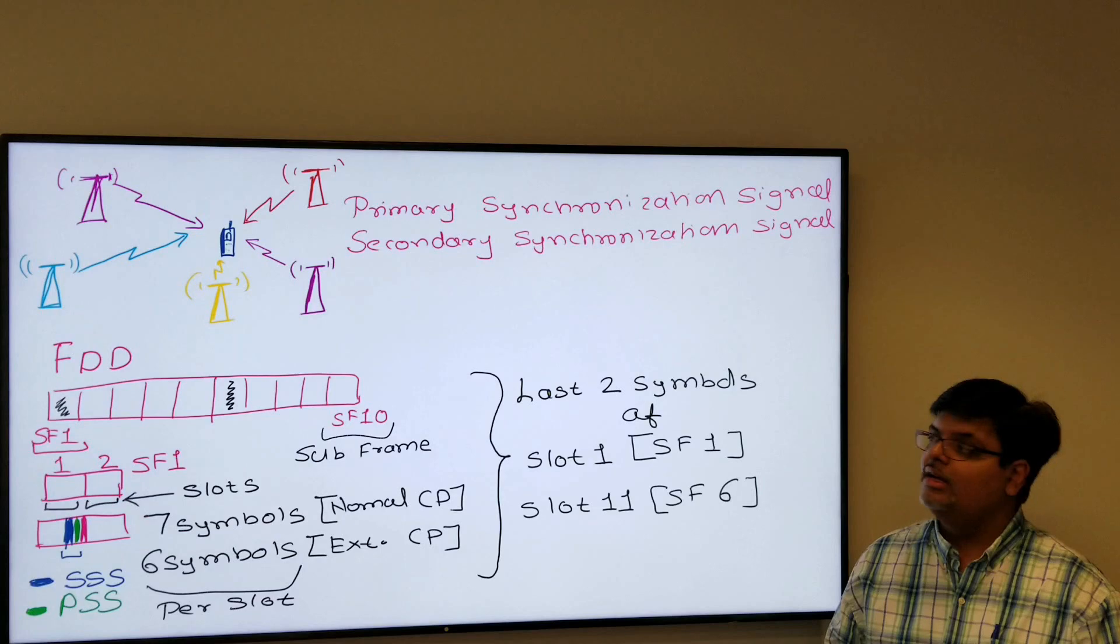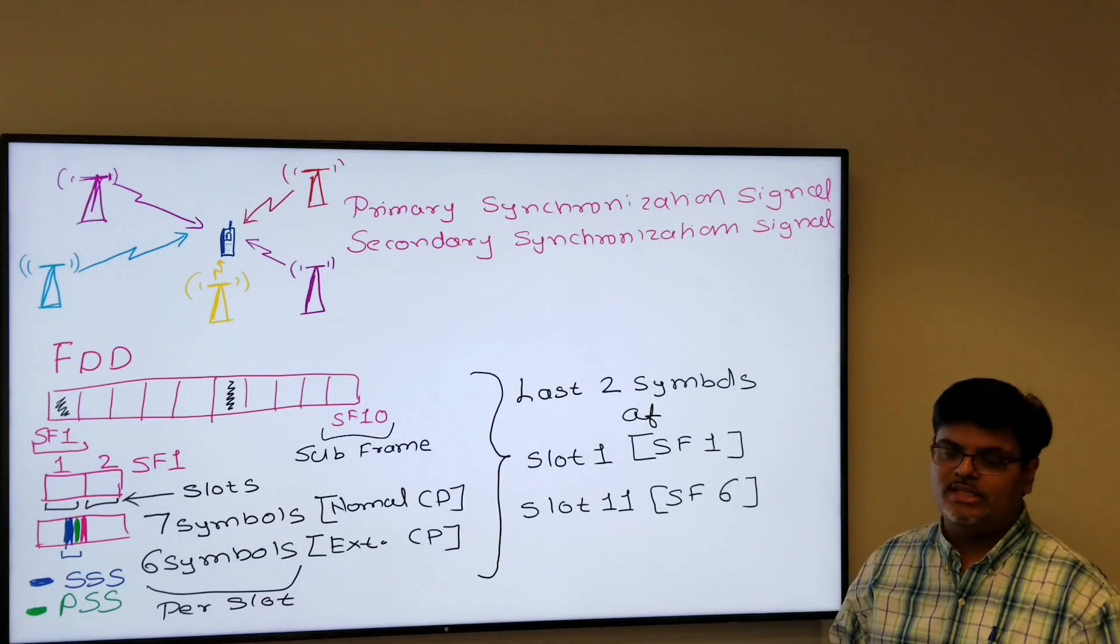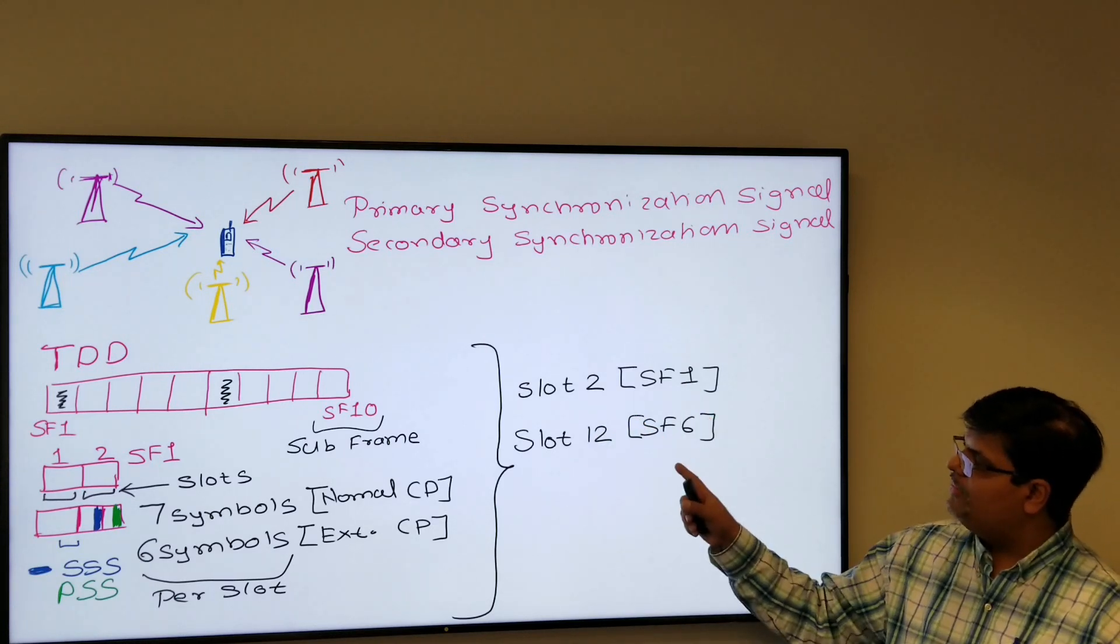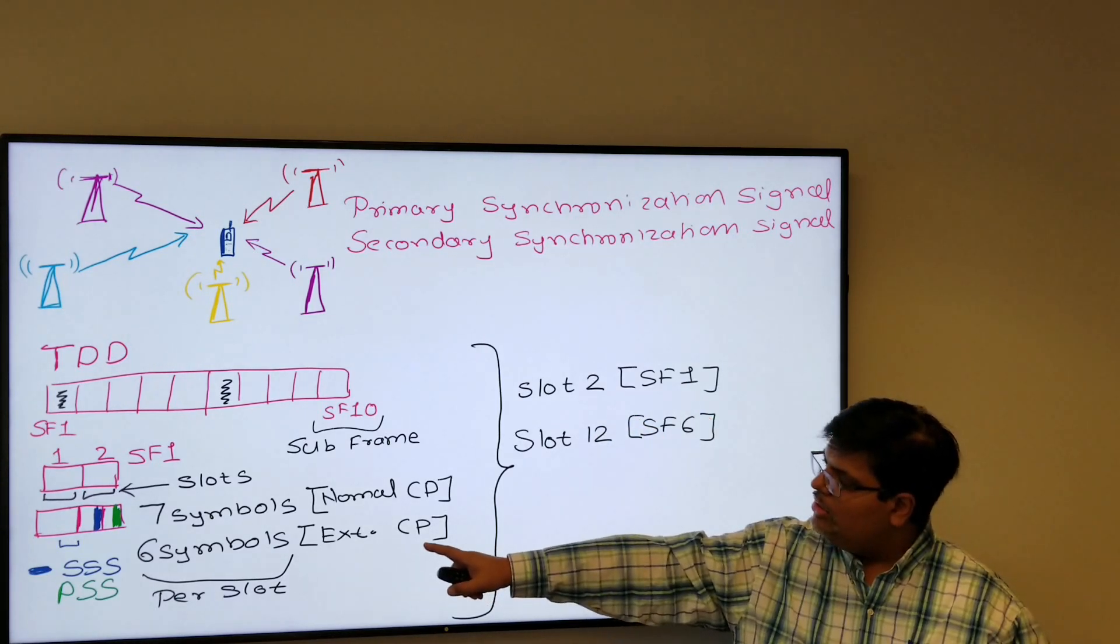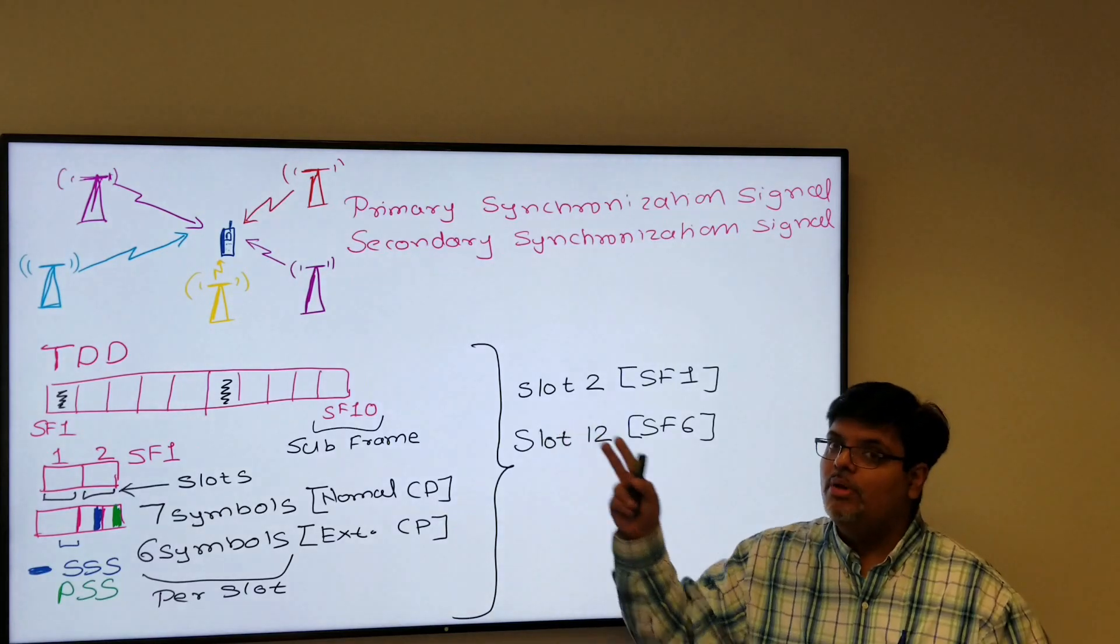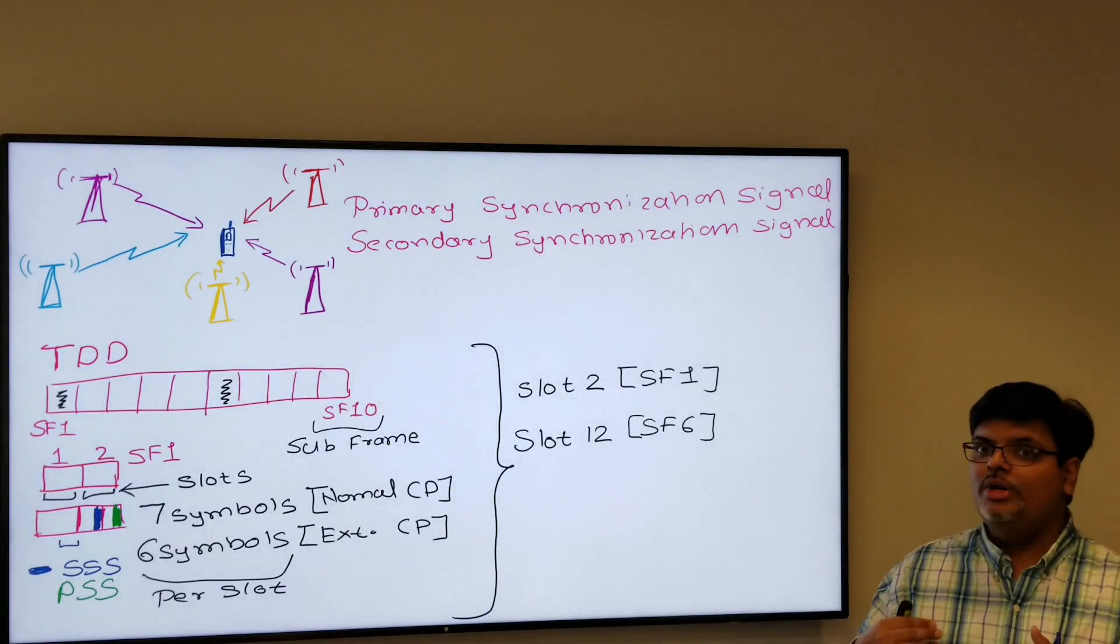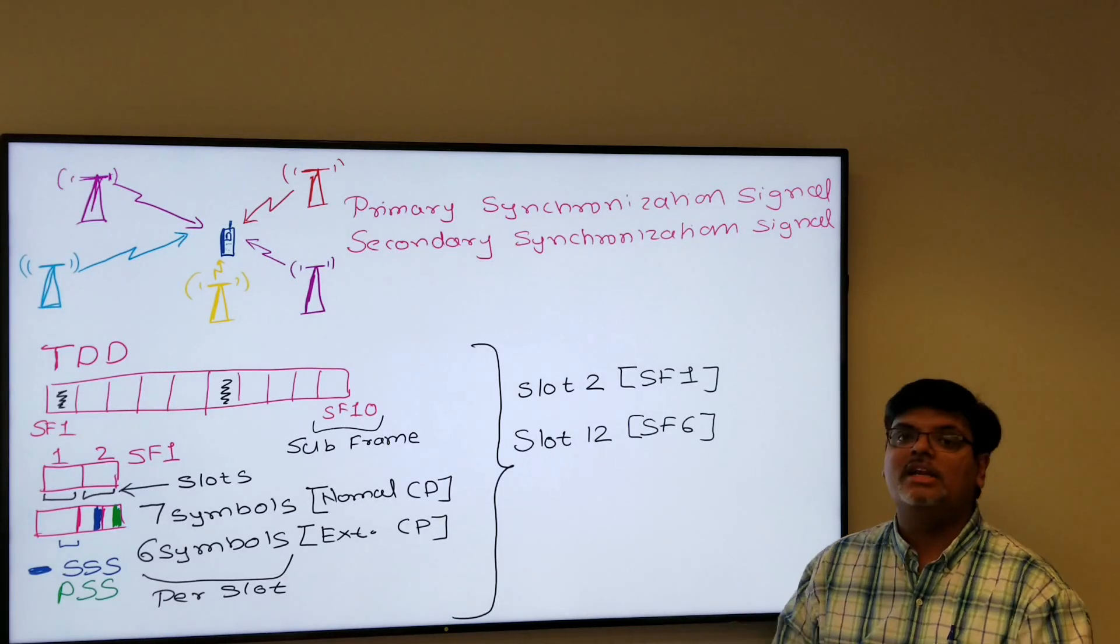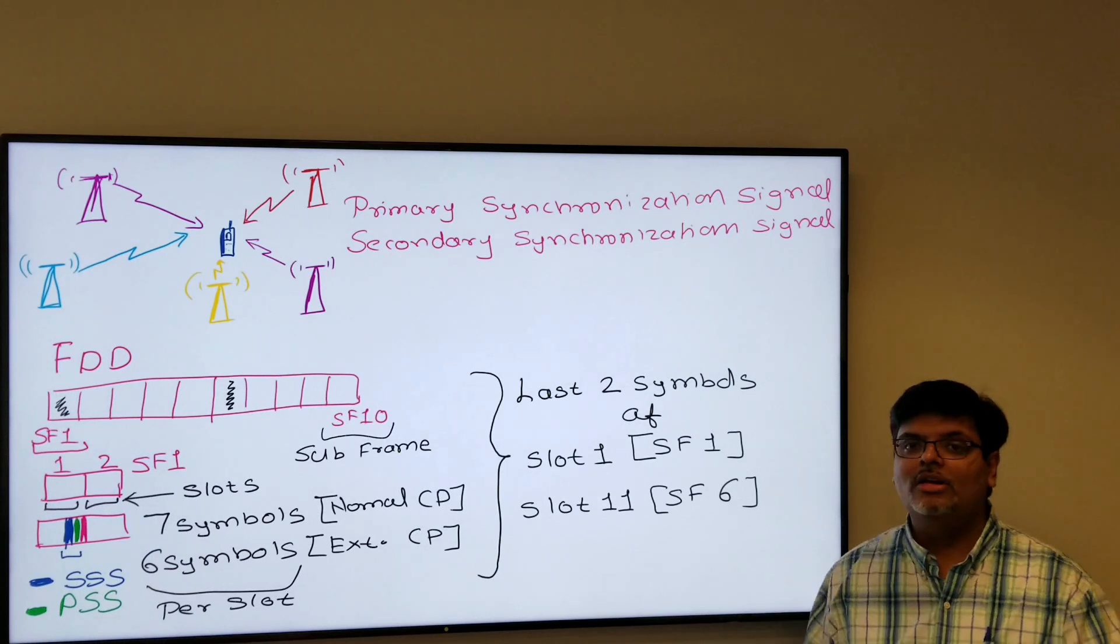If you see in TDD, the positioning of PSS and SSS is slightly different. Here it's transmitted in slot 2 and slot 11 of subframe 1 and 6, and also the gap between the PSS and SSS is two symbols. So when UE reads the difference of the position in PSS and SSS, it comes to know what technology is being used, FDD or TDD.